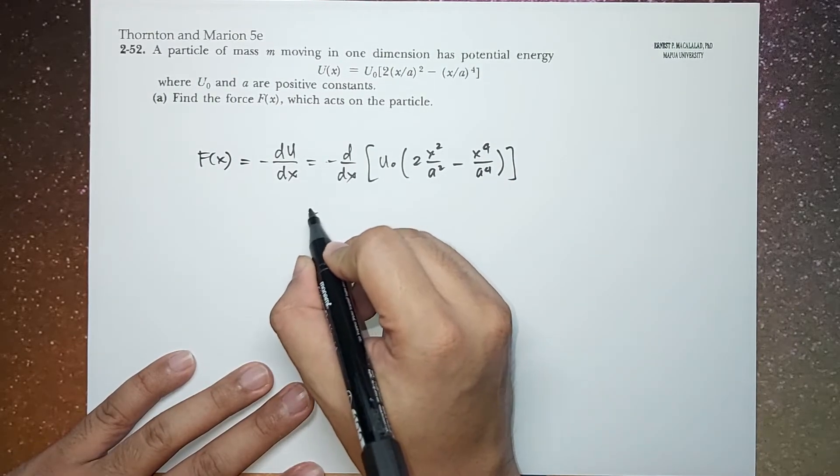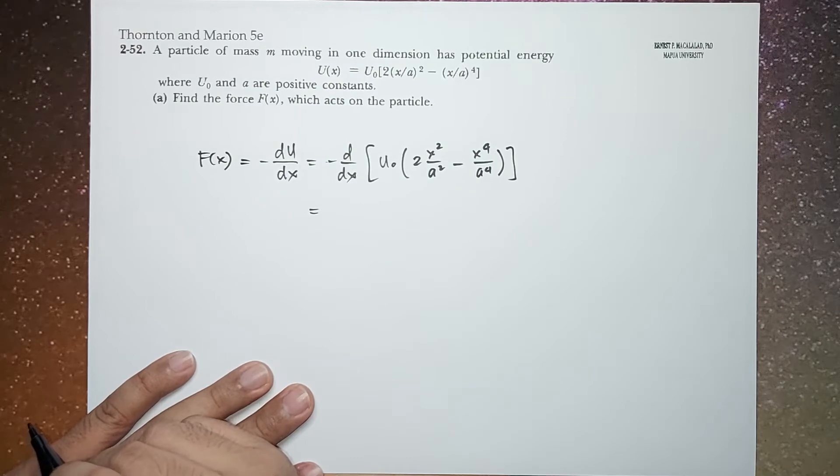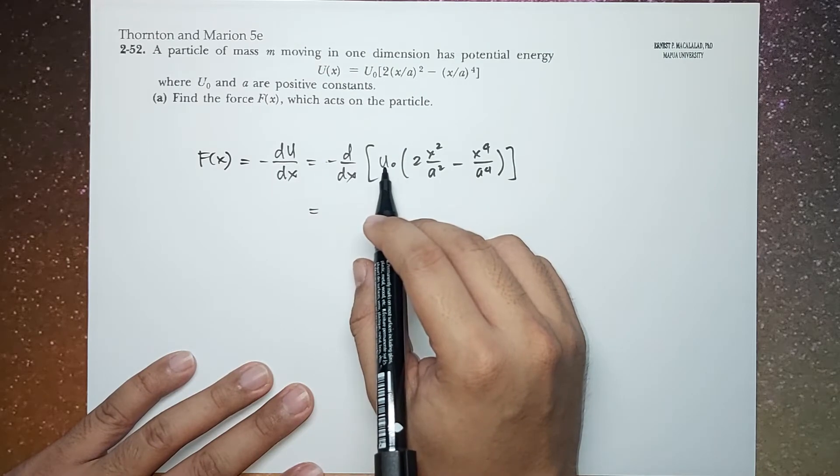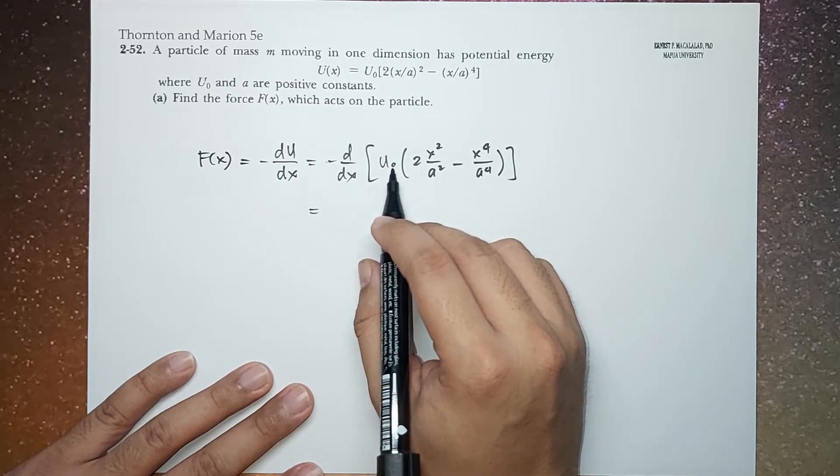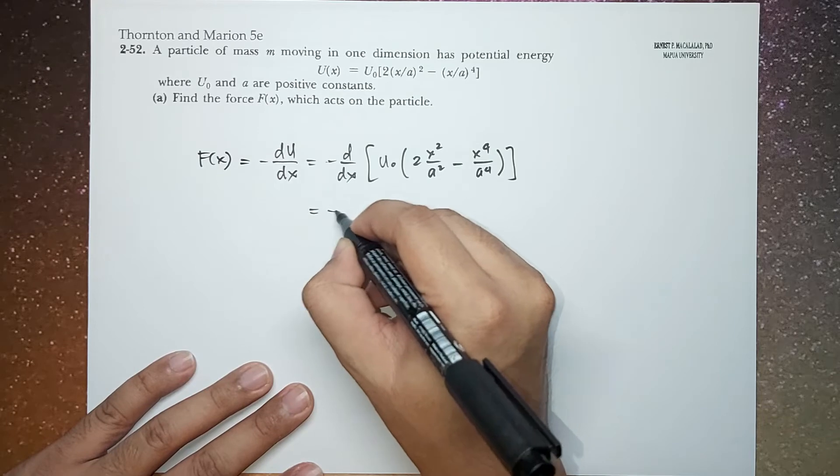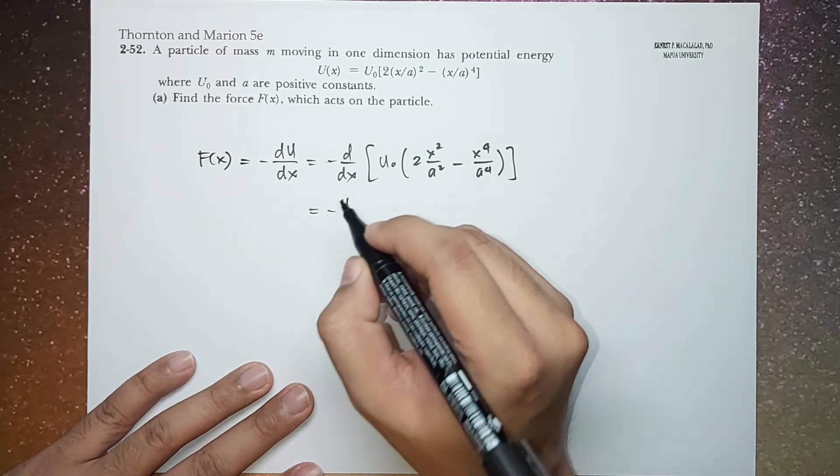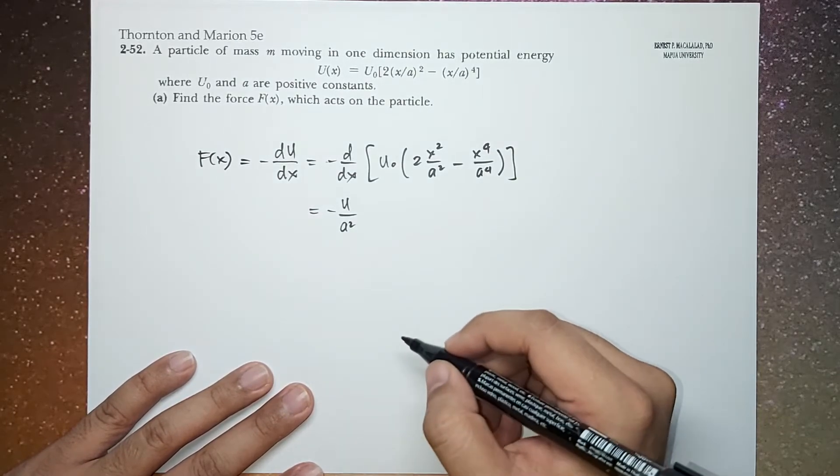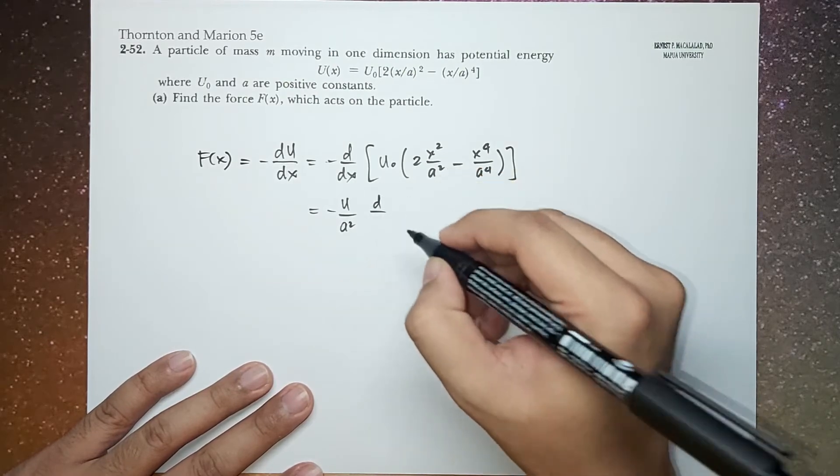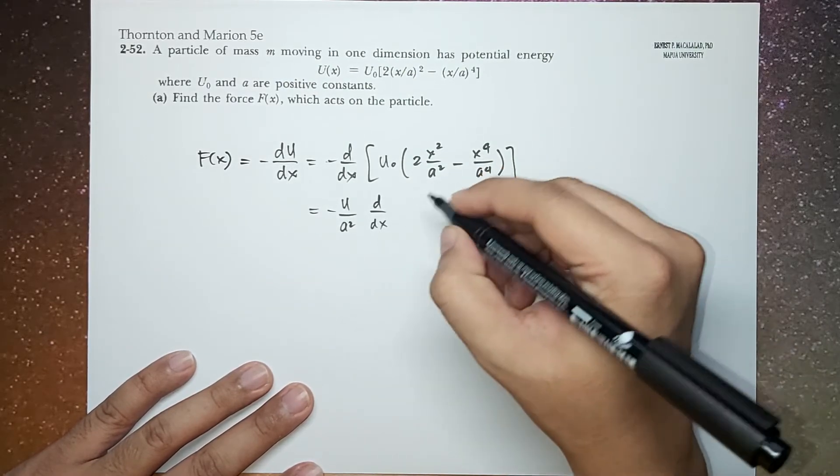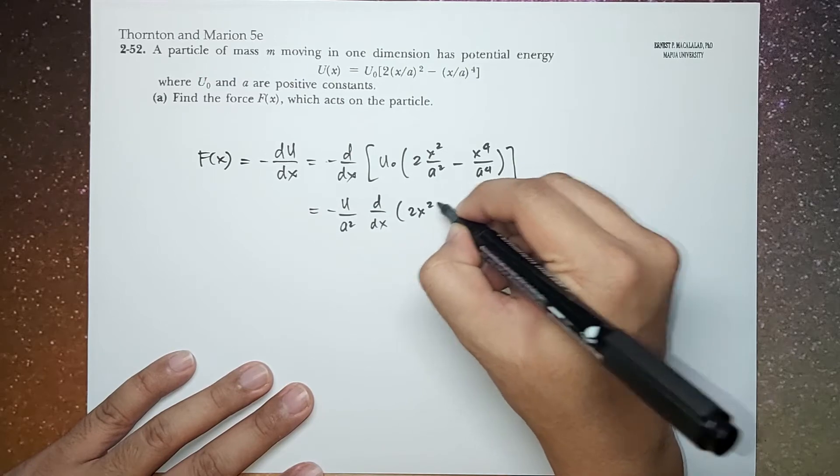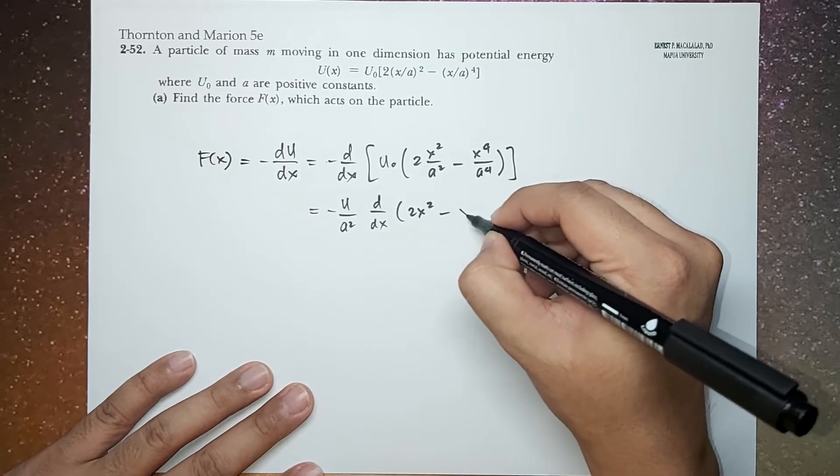So let's try to simplify this before taking the derivative. Here we can take out U0. So this is negative U0 over A squared. And then we just take the derivative with respect to X of (2*X^2 - X^4/A^2).